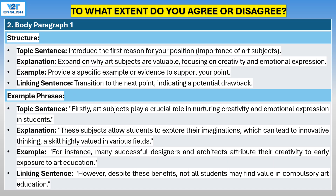Body paragraph 1 structure: Begin with a topic sentence introducing the first reason for your position. Expand on the importance of art subjects, focusing on creativity and emotional expression. Provide a specific example or evidence to support your point. End with a linking sentence transitioning to the next point, indicating a potential drawback.